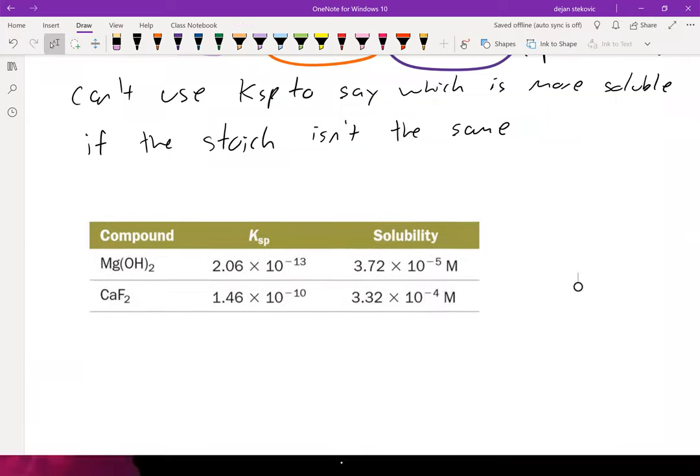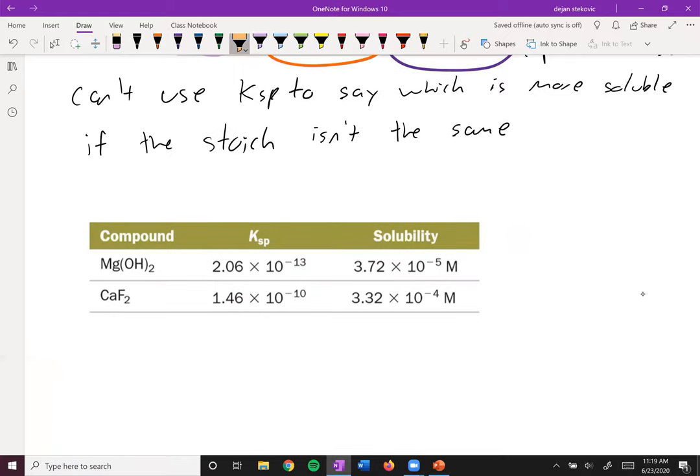And this next example, we can see our stoichiometry is the same. Magnesium hydroxide splits up into three products. Calcium fluoride splits up into three products as well. And so in this case, this KSP of magnesium hydroxide is smaller. And then the corresponding solubility is also smaller.